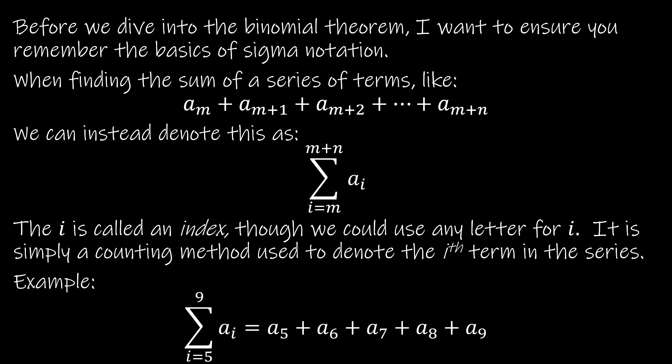Before we dive into the binomial theorem, I want to take a look at sigma notation or summation notation. Hopefully you're very familiar with it, but if not, here are the basics. When you have something that looks like this, sigma tells us to find the sum. The value on the bottom and the top — the i stands for index, and it's really just a counting procedure. The m tells us the lower limit, and whatever you have up top is going to be the upper limit. Then whatever happens here is really just going to be each value of the series.